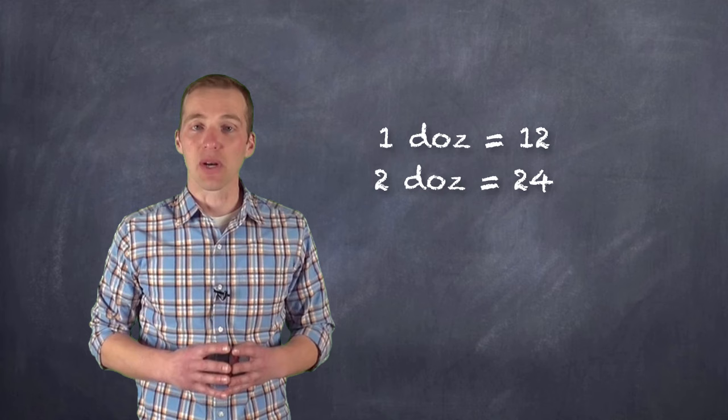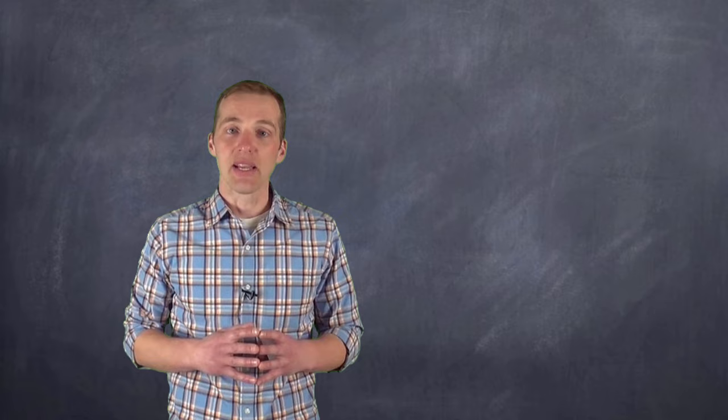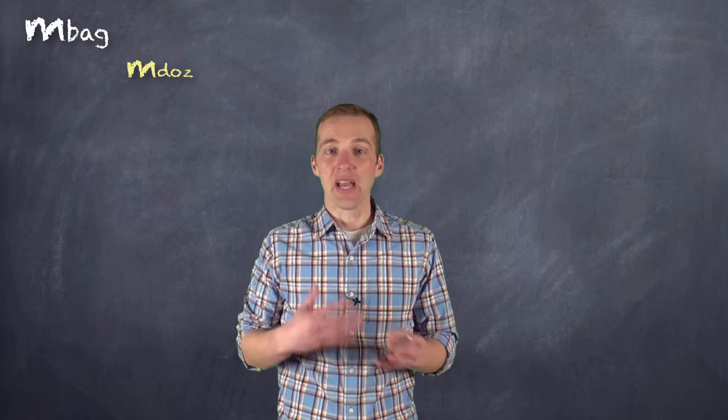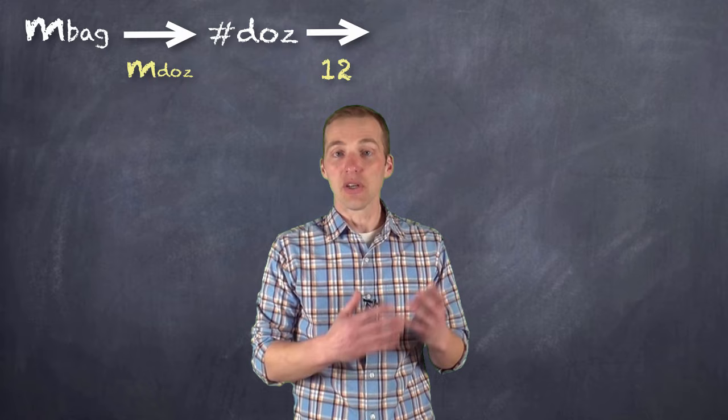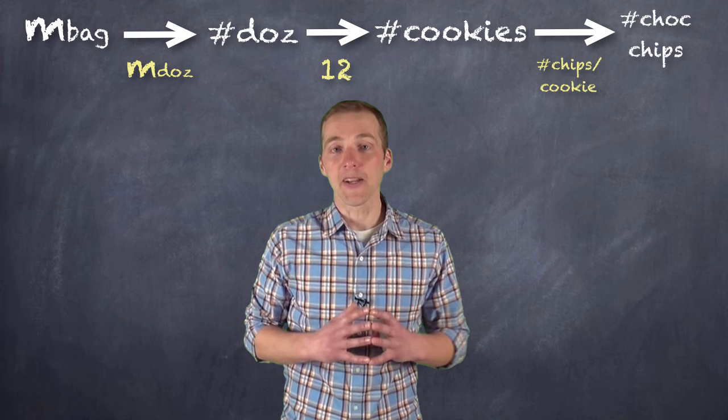Similarly, if you went to the store and bought a bag of cookies, the bag likely has a mass listed. If you knew the mass of a dozen cookies and the mass of the bag, you could figure out how many dozens are in the bag, and ultimately how many cookies you have. And if the number of chocolate chips per cookie is standard, you could figure out the total number of chocolate chips in the bag. Seems pretty logical, right?